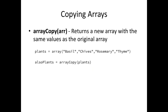Copying arrays — this is something important to remember. You can assign an array to another array simply using equals, but under the hood you're working with the same object. So if you want to work with a copy of an array without affecting the original, you need to use array copy. Here, when I call array copy on the plants array, I'll have 'also plants'. They will have the same values, but if I manipulate 'also plants', it won't affect my original plants array.